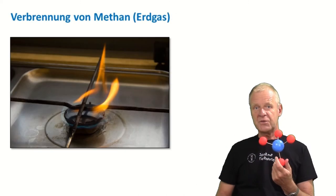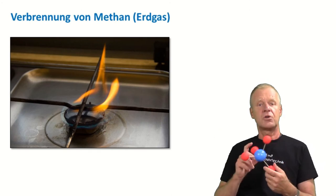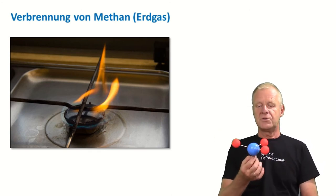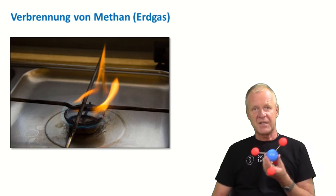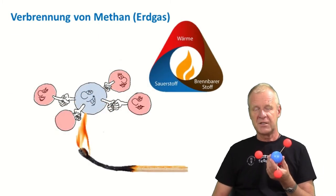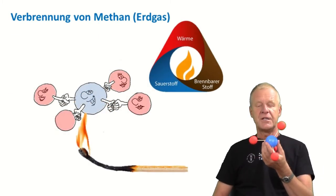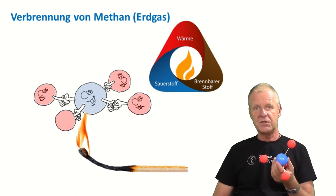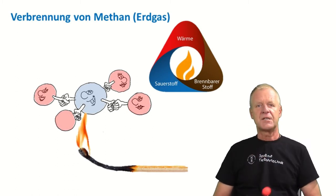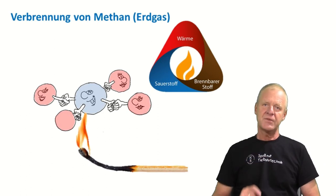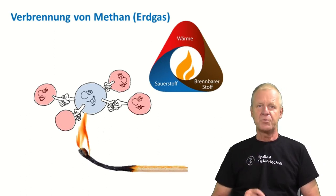So what do we do with natural gas? Mostly, it is burned, for example, to cook, as you can see here. So what happens when we burn methane? A flame requires three things: heat, a combustible material, which is in our case methane, and the third, very important, oxygen.